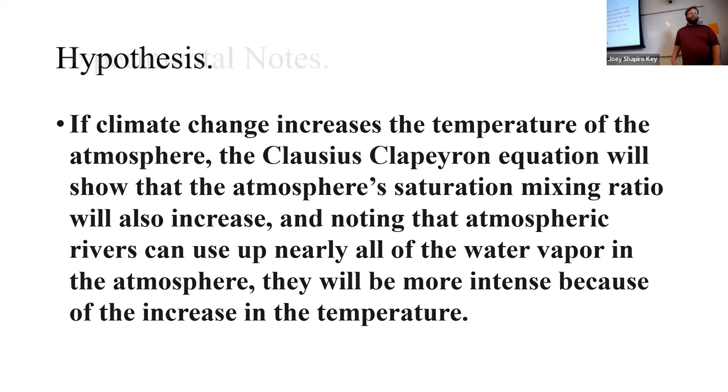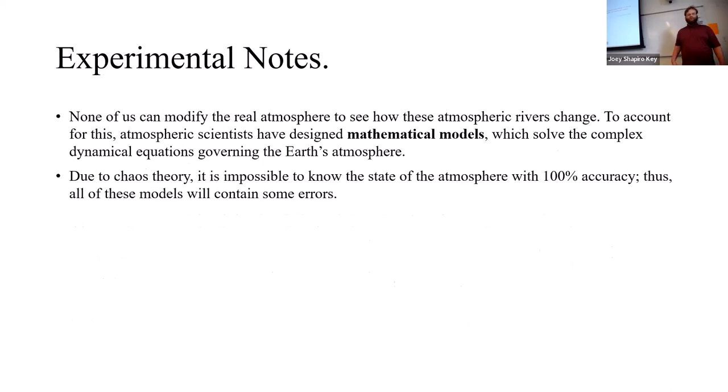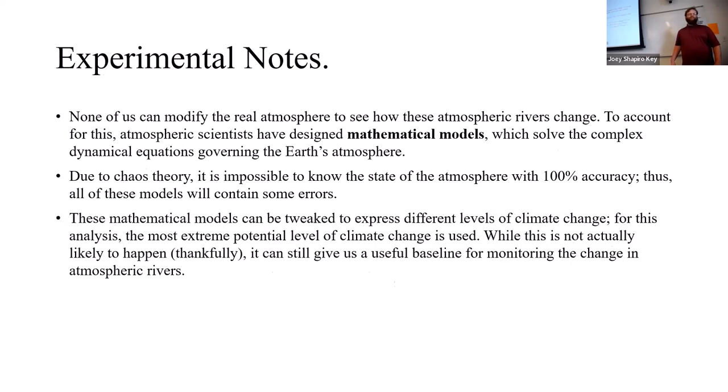Here are some notes about the experiment we did. None of us can actually modify the real atmosphere, so we have to use these complex mathematical models to solve the atmospheric differential equations. It's impossible to perfectly know the state of the atmosphere due to chaos theory, so there will always be errors in predictions. These mathematical models can express different levels of climate change. For the analysis, we decided to use the most extreme level, because while this isn't necessarily super likely, it does provide a baseline for us to compare against. Thankfully, it's not actually likely to happen.